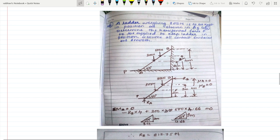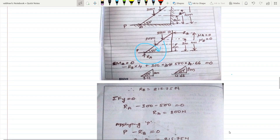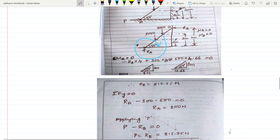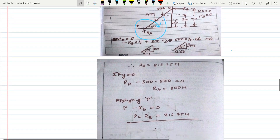Taking moment about point A: Rb causes anti-clockwise moment, so −Rb × 4 + 300 × 3.11 + 500 × 4.66 = 0, giving Rb = 815.75 N. Taking summation of vertical forces: Ra − 300 − 500 = 0, so Ra = 800 N. Applying equilibrium of horizontal forces, P − Rb = 0, therefore P = Rb = 815.75 N.